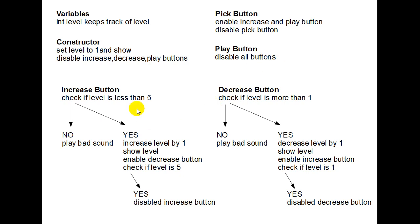Down here is a good example of what takes place when you have some events that are going to involve if statements, and how you can draw them out in your pseudocode — almost a little flowchart type style. When the increase button is pressed, I check if the level is less than 5. If the answer is no, I play a little bad sound just to let them know you can't do it. If the answer is yes, increase the level by 1, show the level, enable the decrease button, and check if the level is 5. If the level is 5, I disable the increase button.